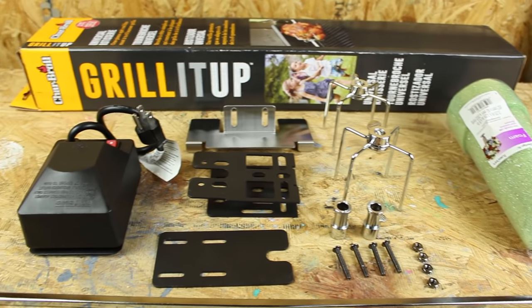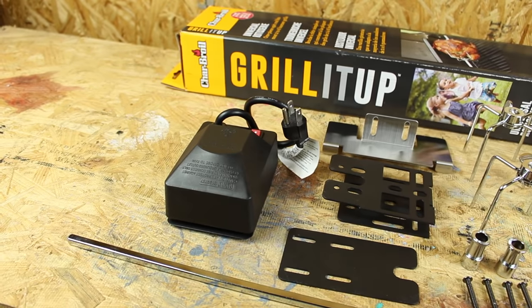Parts needed are a grill it up rotisserie and a foam flower block. Links to these are found in the description below.